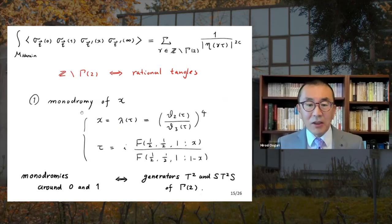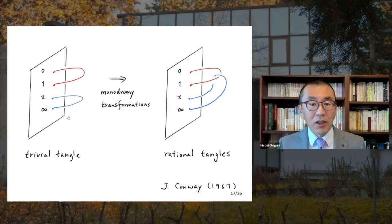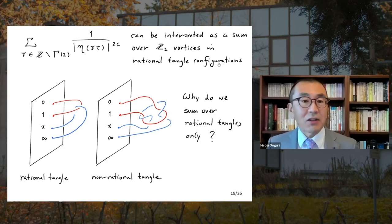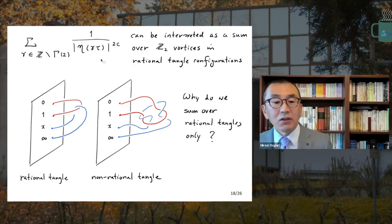There is a correspondence between the monodromy of x and the Γ(2) congruent subgroup. You can actually show that the sum over Γ(2)/Z can be regarded as a sum over configurations of Z2 vortices in rational tangle configurations — equivalently, a sum over rational tangles.